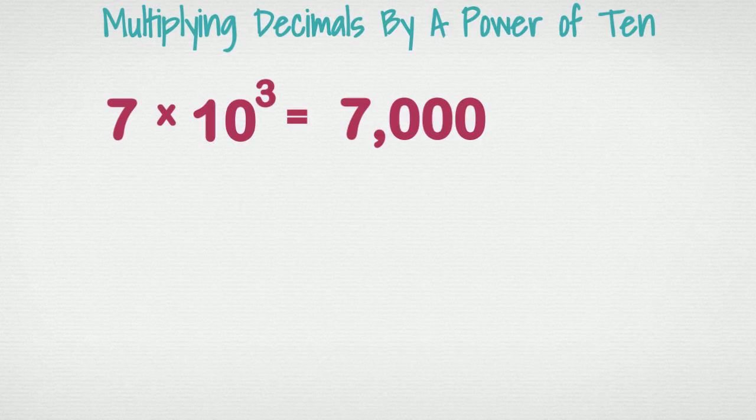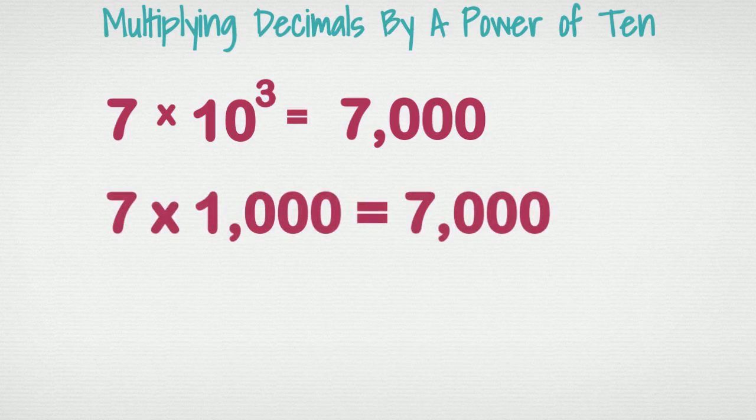It is the same thing as multiplying seven times a thousand. There are three zeros in a thousand and therefore seven times one thousand equals seven thousand.